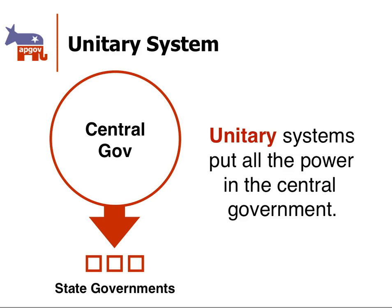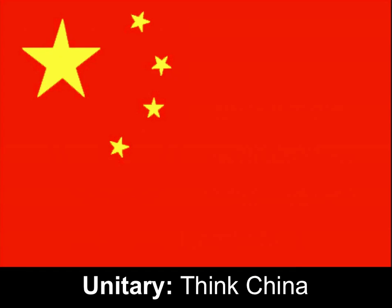Unitary systems, by contrast, put all the power on the central government. Notice here the central government circle is bigger and the squares are much smaller. They boss around the state governments and tell them the way it's going to be. When you hear unitary, I want you to think China. In China, their states or provinces don't have nearly the kind of power that Minnesota or Iowa or Wisconsin have in the United States. Beijing and the Communist Party there basically tells the states the way it's going to be.